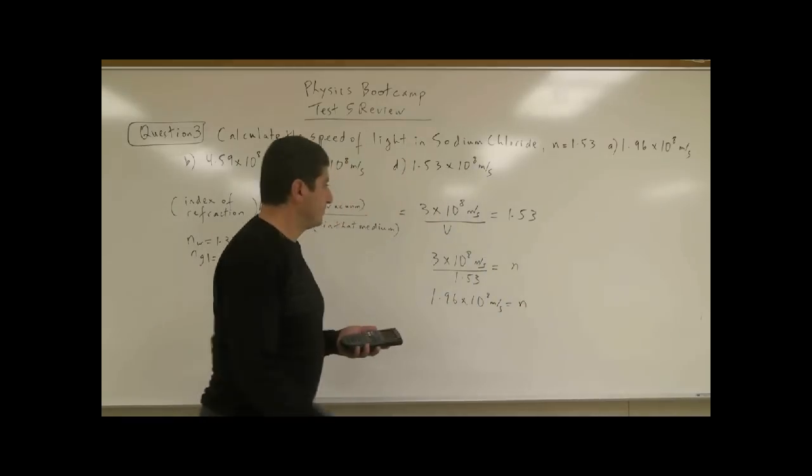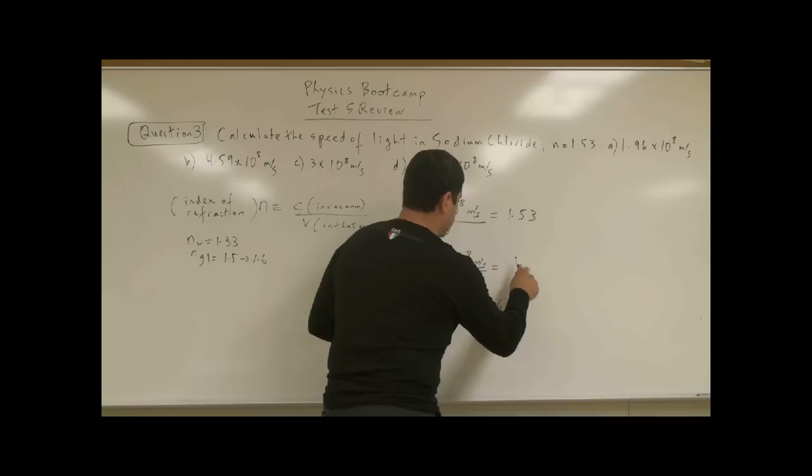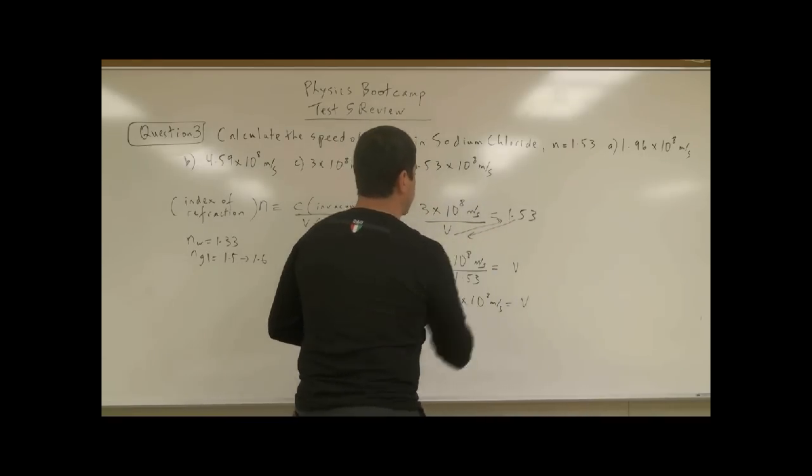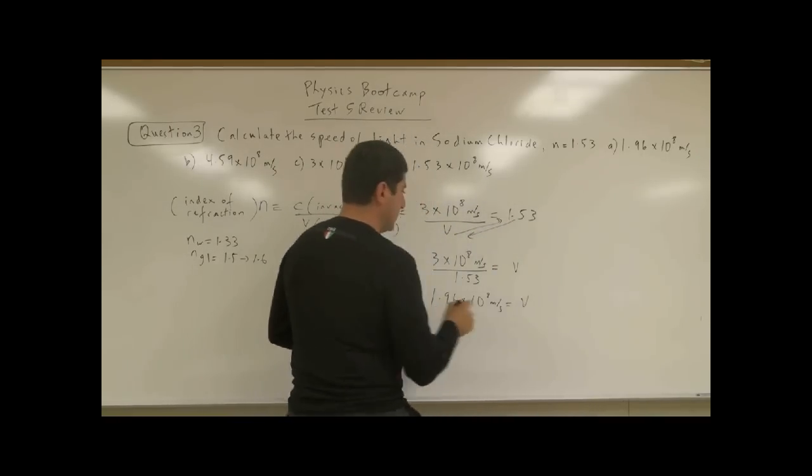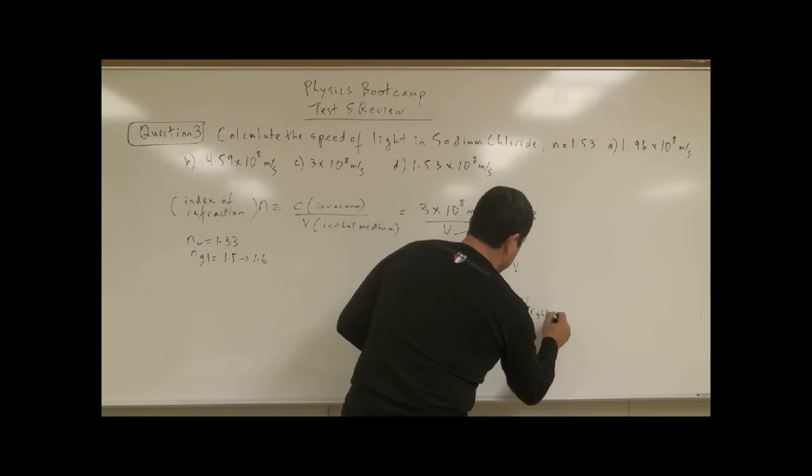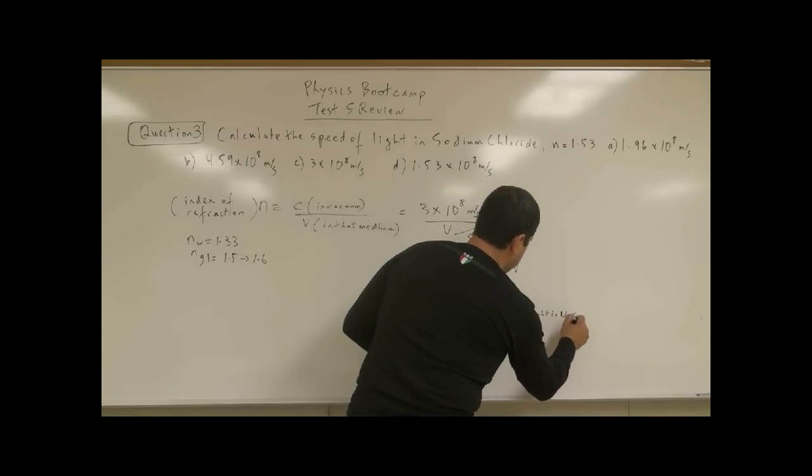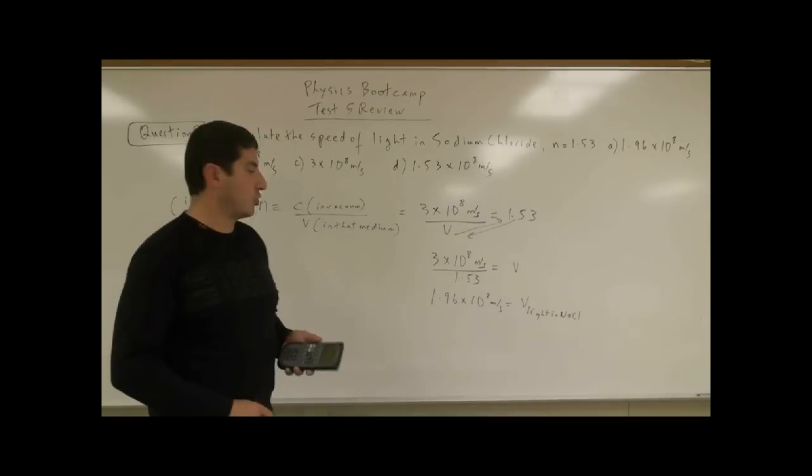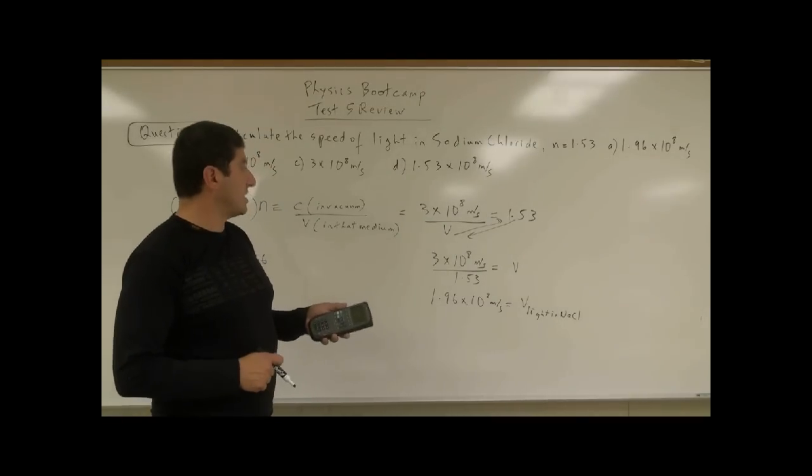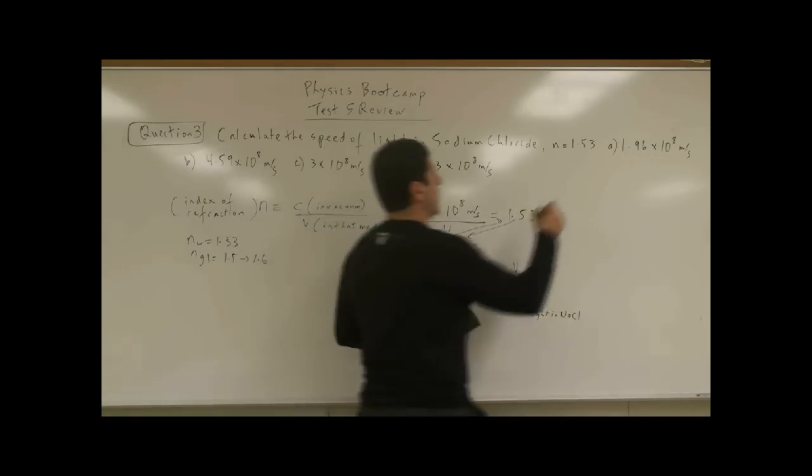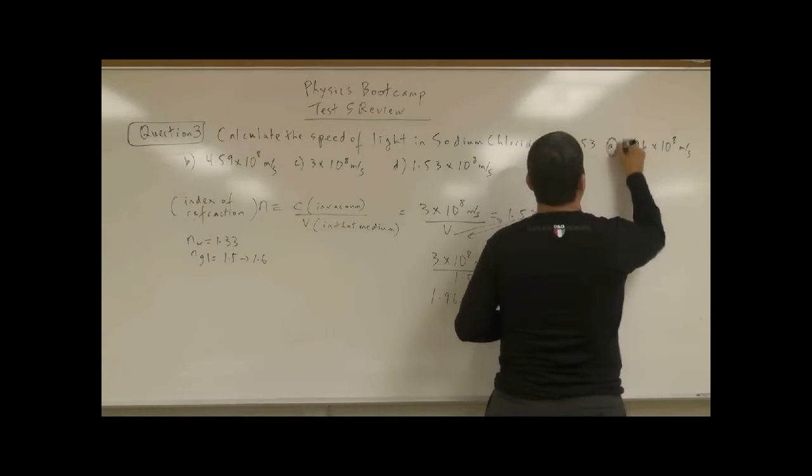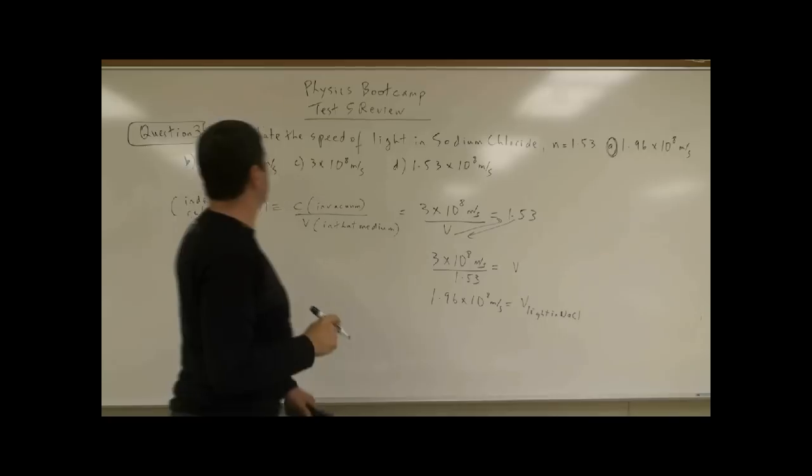That's equal to the velocity because v goes up there and then n comes down here. So we should write here v. This is the velocity of light in NaCl, in sodium chloride. You could see it has been slowed down. So what is the answer? A. 1.96 times 10 to the 8.